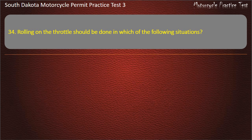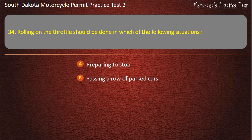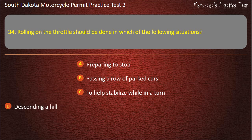Question 34: Rolling on the throttle should be done in which of the following situations? Preparing to stop; Passing a row of parked cars; To help stabilize while in a turn; Descending a hill. Answer: To help stabilize while in a turn.